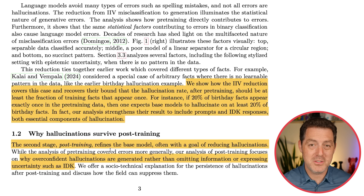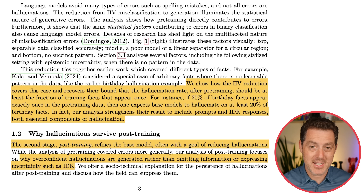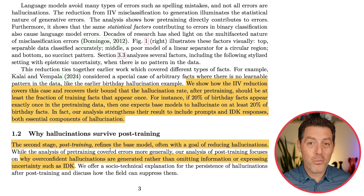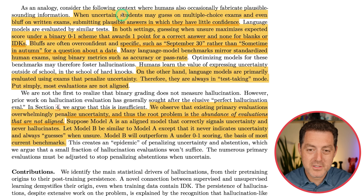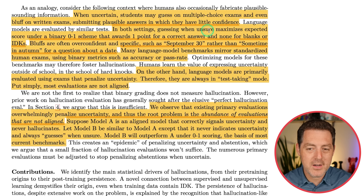It turns out it's very similar to what humans do on multiple choice tests. If you have a multiple choice test and you don't know the answer, you have a higher likelihood of getting it right by guessing. With four potential answers, you have a 25% chance. But if you abstain and say 'I don't know,' you're guaranteed to get a zero. As the paper says: guessing when unsure maximizes expected score under a binary zero-to-one scheme that awards one point for a correct answer and none for blanks or 'I don't knows.'